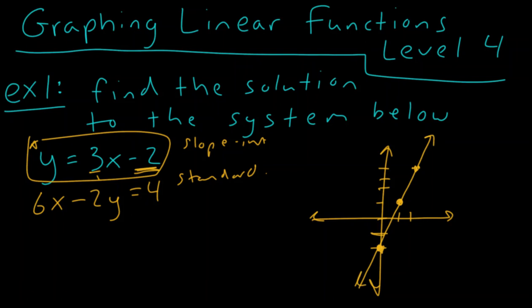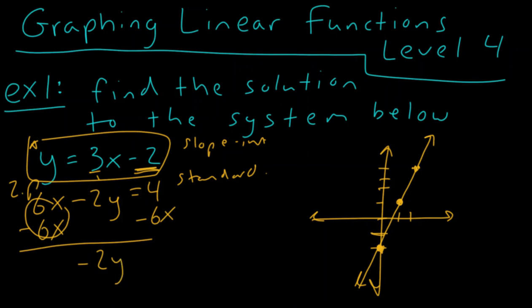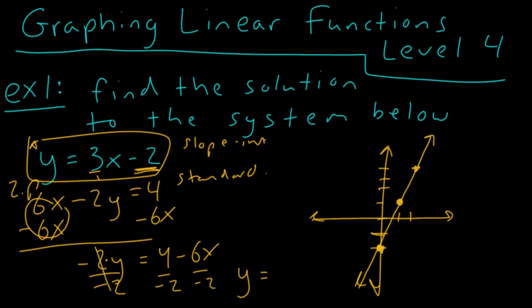Now looking at six x minus two y equals four, we need to get the letter y by itself. First, we subtract six x from both sides, creating a zero pair, giving us negative two y equals four minus six x. Then we divide every term by negative two: four divided by negative two is negative two, and negative six x divided by negative two is positive three x. So we get y equals three x minus two.